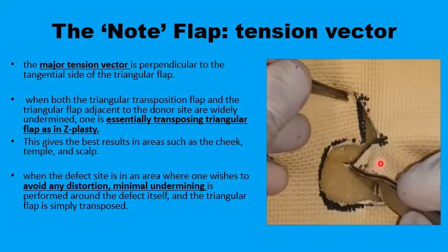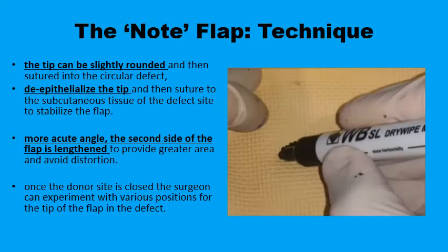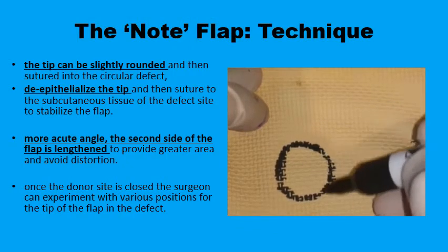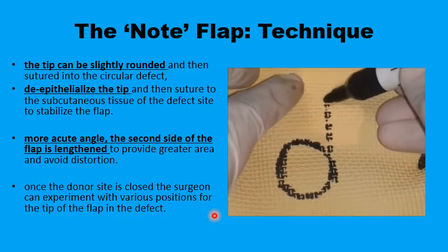If the flap is being used to fill a defect in the cheek or the temple, you can undermine both the flap itself and the circular defect. However, if the circular defect is close to an anatomical landmark like the nasal ala, then you restrict your undermining to the area of the flap itself, with minimal undermining of the defect in order not to distort the anatomical landmark.